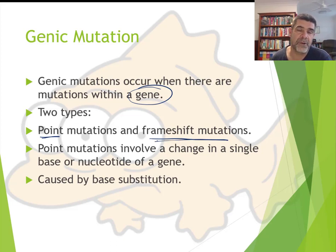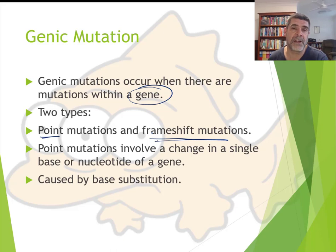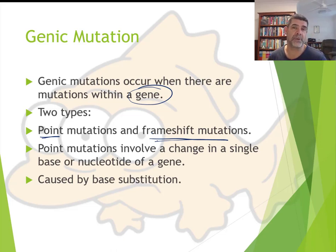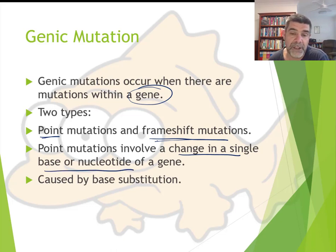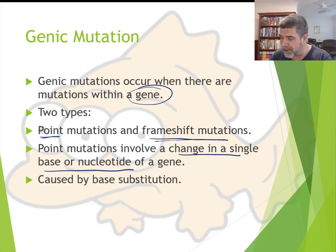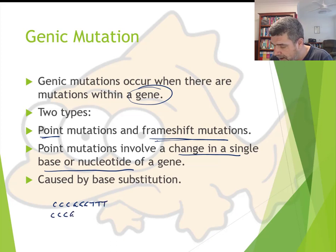The cause of each of these is a single change to a nucleotide base. There are a couple of different consequences associated with these changes. A point mutation is a change in a single base or nucleotide of a gene. When looking at our DNA sequence of bases, you might have a range of Cs, Gs, and Ts, and then at some point along here something changes.